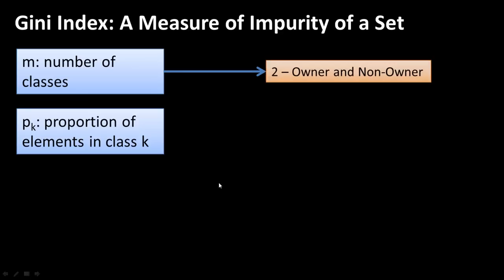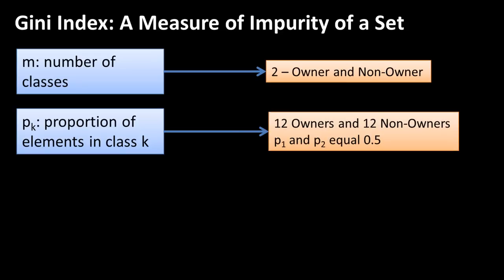First, M is the number of classes. So in our present example, we have got two classes. In the riding mowers example, there are two classes. A case can either be an owner or a non-owner. So that is M, which is the number of cases. And Pk is the proportion of elements in class k. So in our present example, P1, which is let's say P owner, is 12, because there are 12 owners in our data set. And P non-owner is also 12, because we've got 12 non-owners. Of course, these are not the numbers we are talking about. We are talking about the proportions, so it's 0.5. Initially, the whole set has got equal numbers of owners and non-owners. So Pk, the proportion of the number of elements in each of the cases, is 0.5.